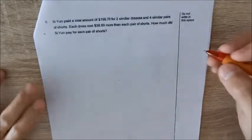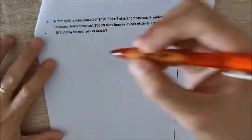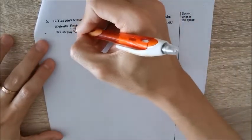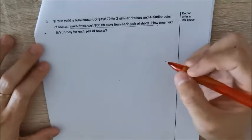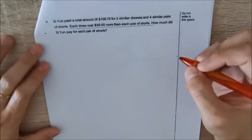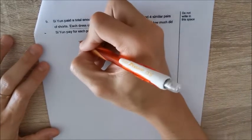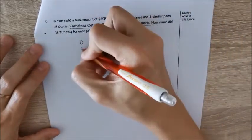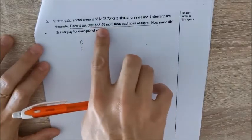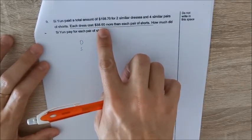First of all, we have to go into this question with the second sentence. We know that the dress cost $38.60 more than each pair of shorts. So let's draw this first. The shorts unit - can you see that the dress should be more expensive, so it should be longer.